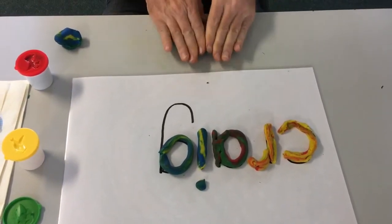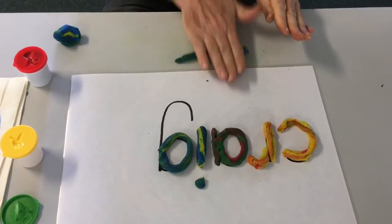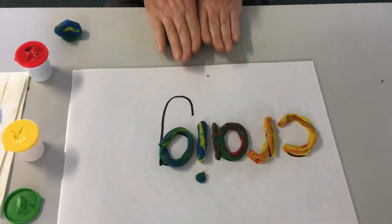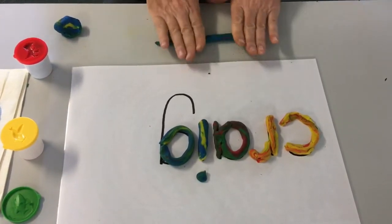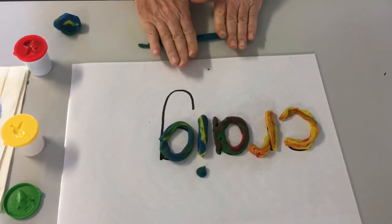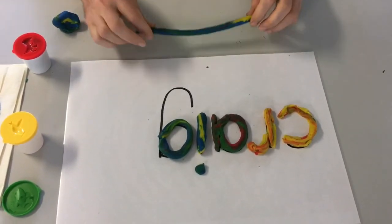And roll that rope shape. Backwards and forwards. Rolling, rolling, rolling. As long as I can get it. That looks pretty good.